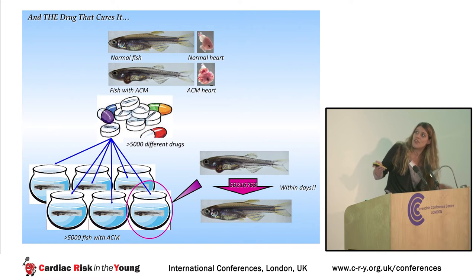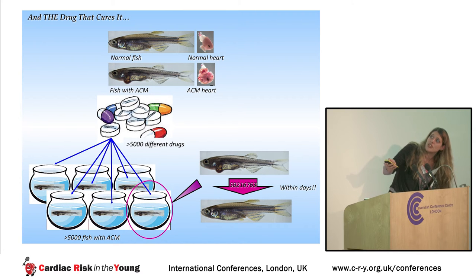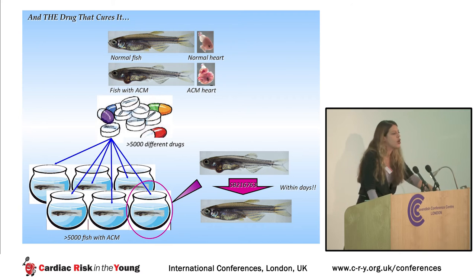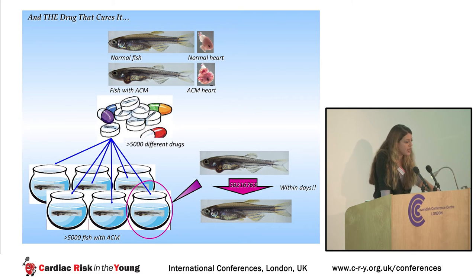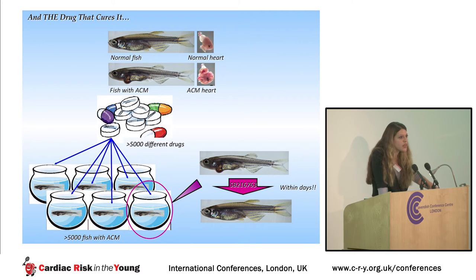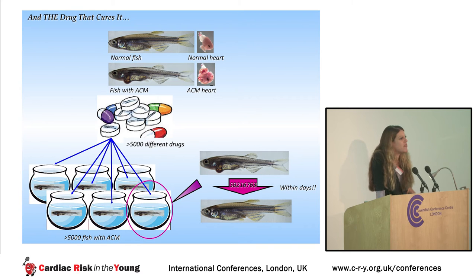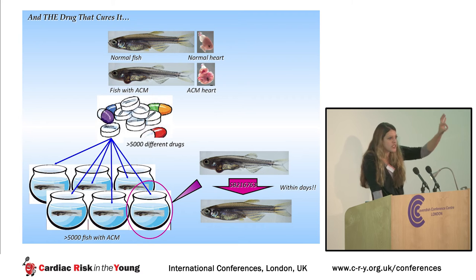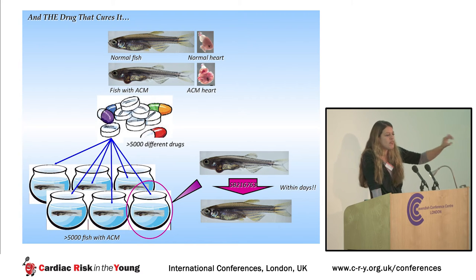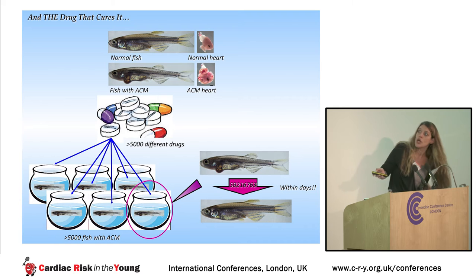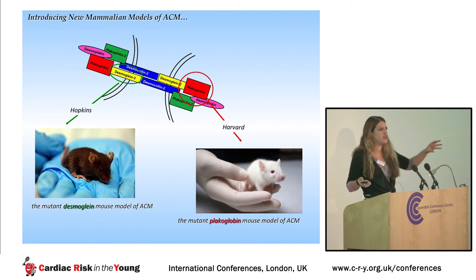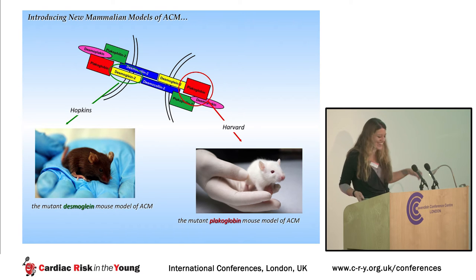What you could do with this fish was essentially this: take 5,000 fish with ARVC where the heart is sticking out, dump a library of 5,000 orphan drugs in these tanks, and wait a week. At the end of the week, the majority of these orphan drugs had killed the fish. Some had no effect on the cardiac phenotype at all. But here was one drug out of 5,000 that fixed the fish. Not only does it fix the fish, it prevents the disease as well. Add two drops of this drug to the water of a tank with young arrhythmogenic cardiomyopathy fish and they will never develop the disease. If they already have the disease, it will revert back to physiological measures. So, we cured arrhythmogenic cardiomyopathy in fish.